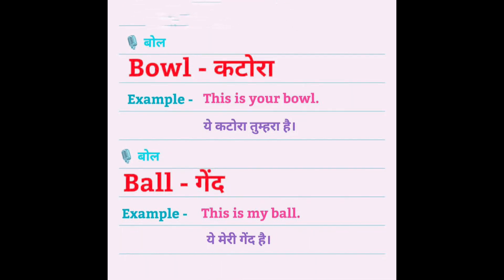Bowl — katora. This is your bowl. Ye katora tumhara hai. Ball — gain. This is my ball. Ye meri gain hai. Ab homophones mein kya hai? Ki spellings different hai but pronunciation same hai.